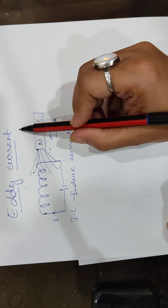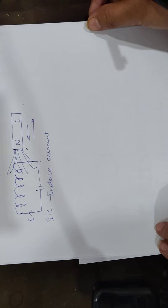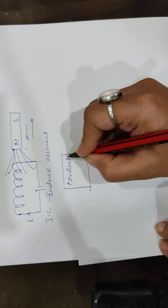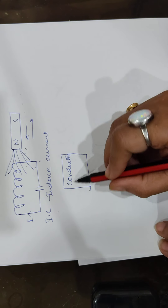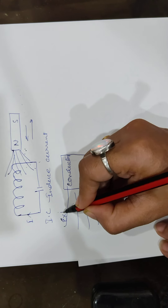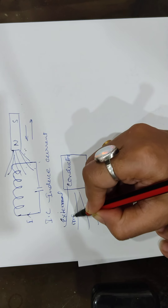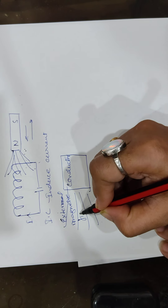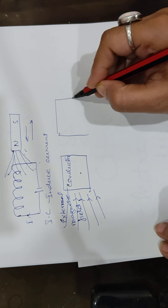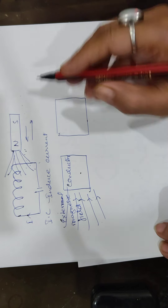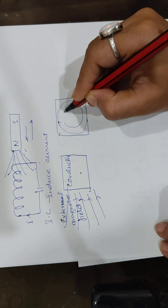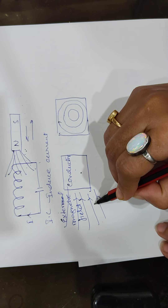Now, are eddy currents the same as induced current? The answer is no — eddy currents are different. In eddy currents, instead of placing a coil, we place a conductor. Any conductor — copper, silver — can be used. It can be rectangular or irregular in shape, placed in an external magnetic field. Inside this conductor, a current is induced which we call eddy currents, and it occurs in circular form.